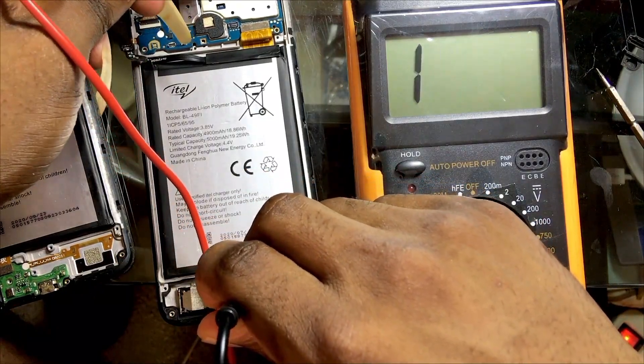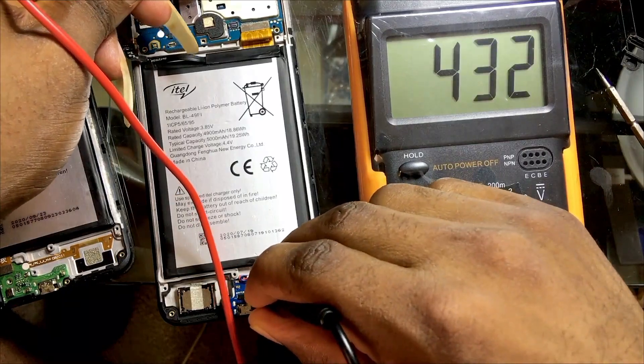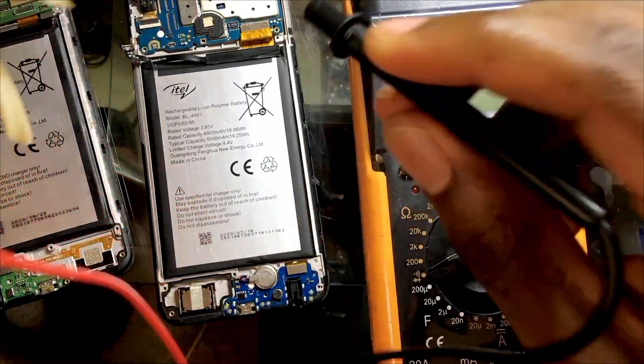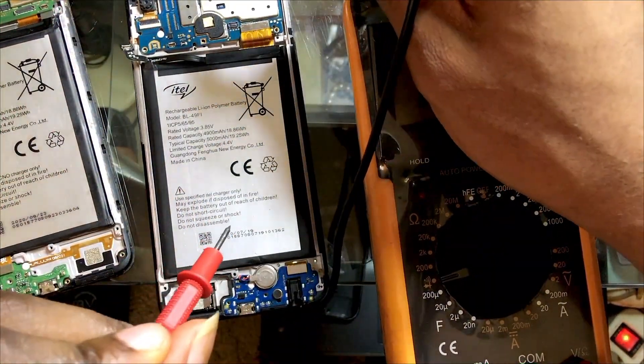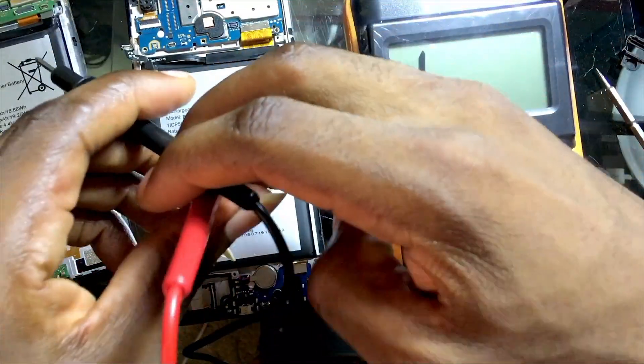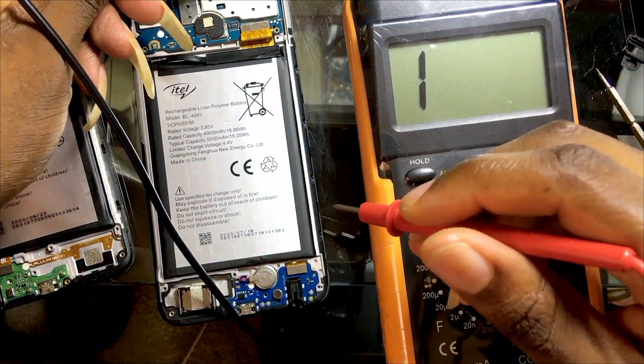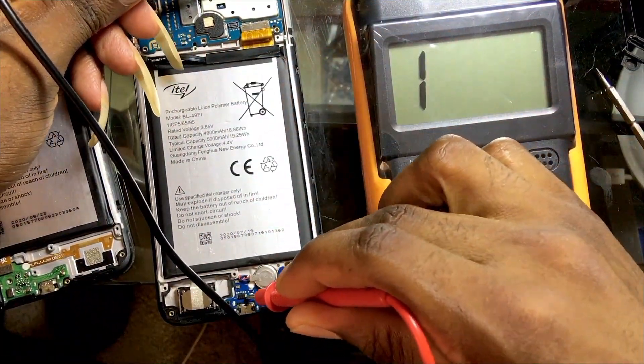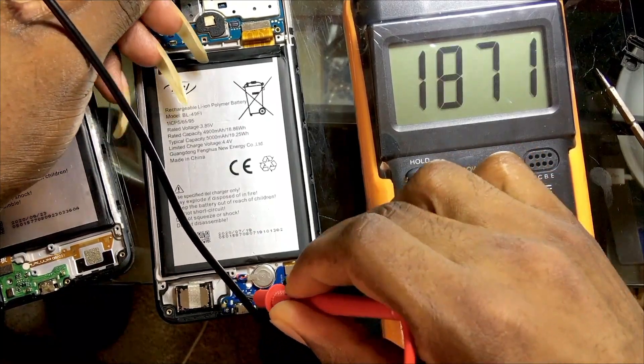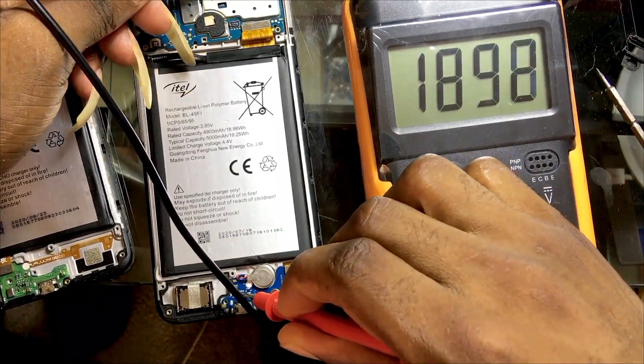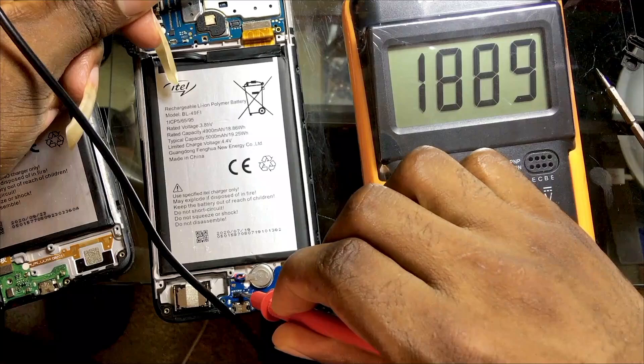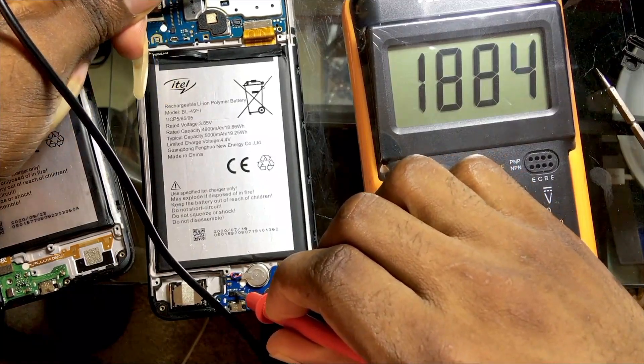So it beeps right here, which means that if I turn like this it does not suppose to beep. That is why I said that it beeps only on one side. But if I turn it this way, you see it's reading. You need to understand that...